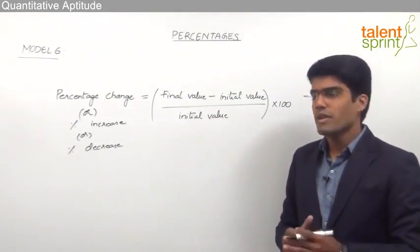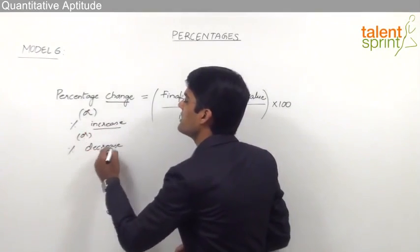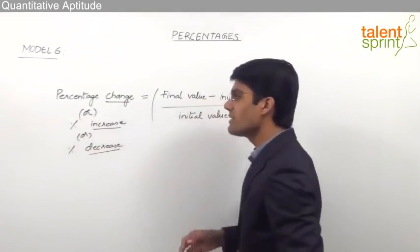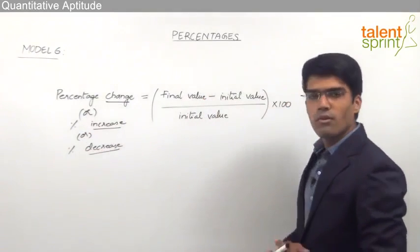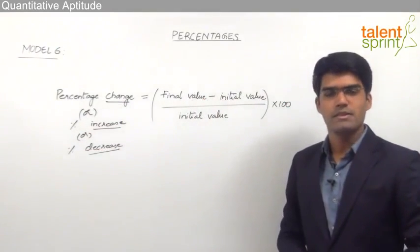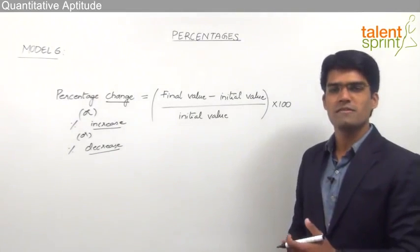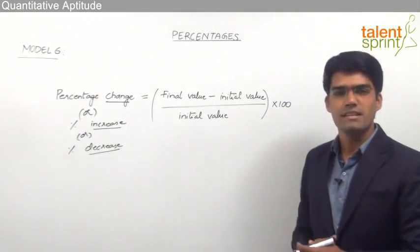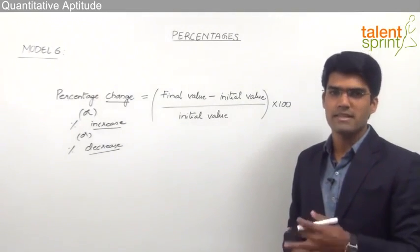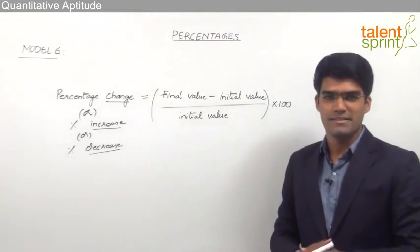And if we get a positive answer, then it should be taken as a percentage increase. So whenever we need to find out percentage change, percentage increase, or percentage decrease, we simply use final minus initial by initial into 100. If the answer is positive, it is a percentage increase; if it is negative, it is a percentage decrease.